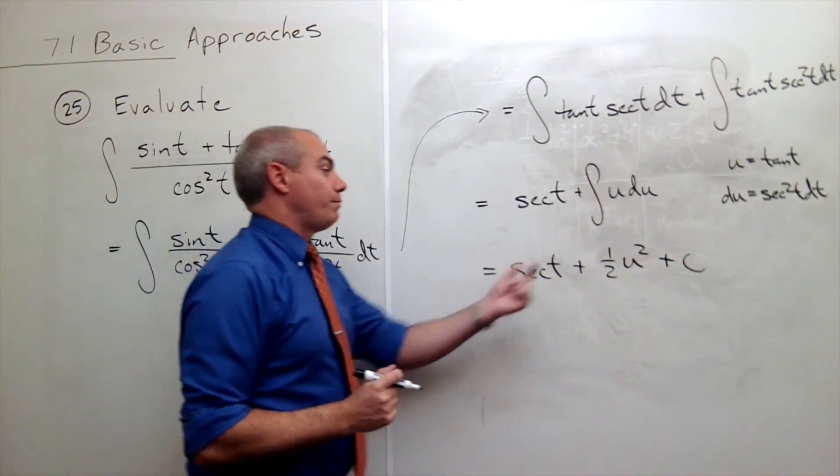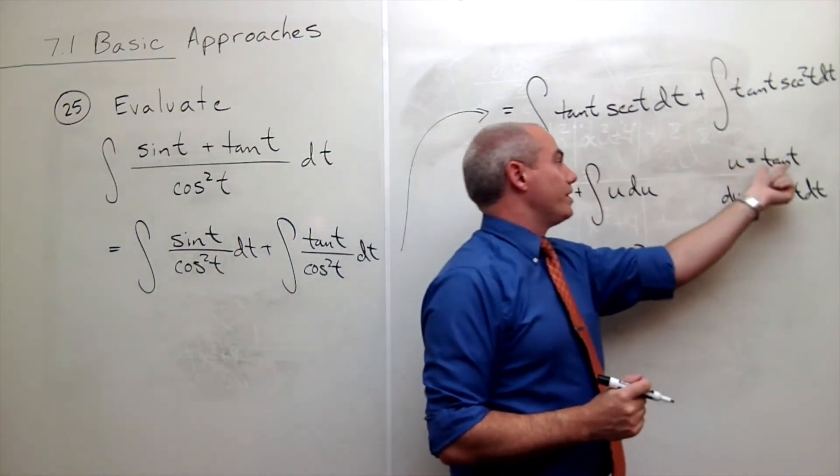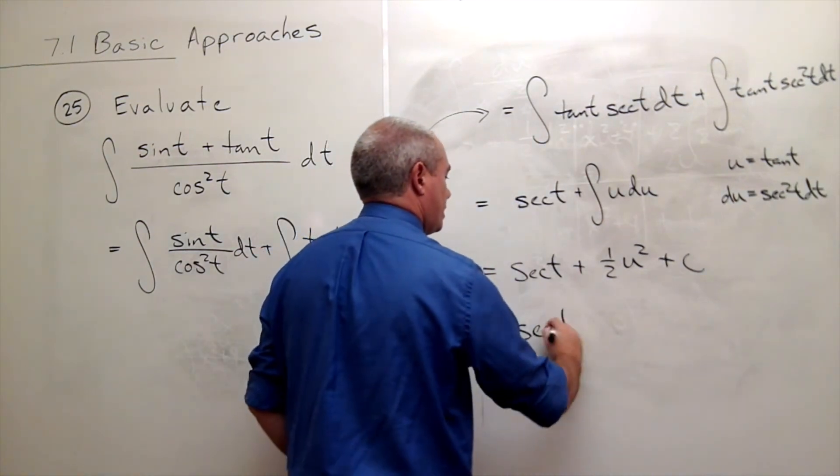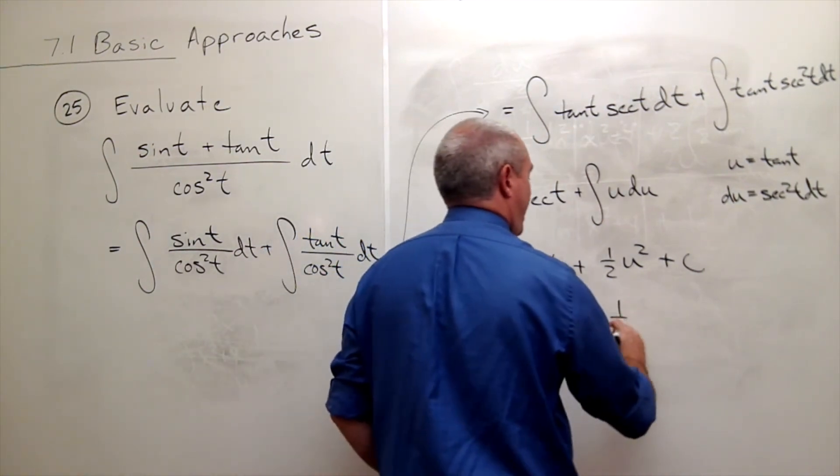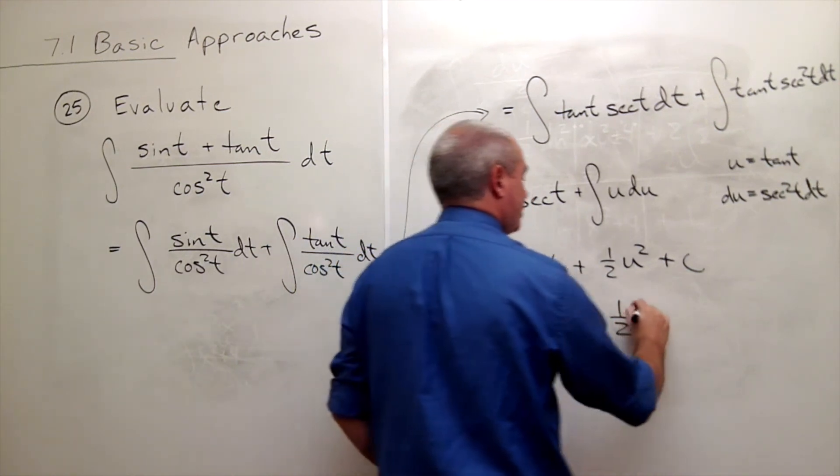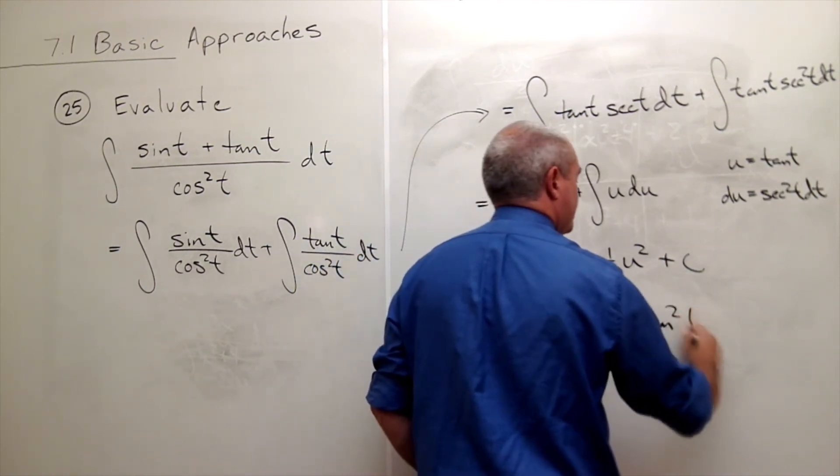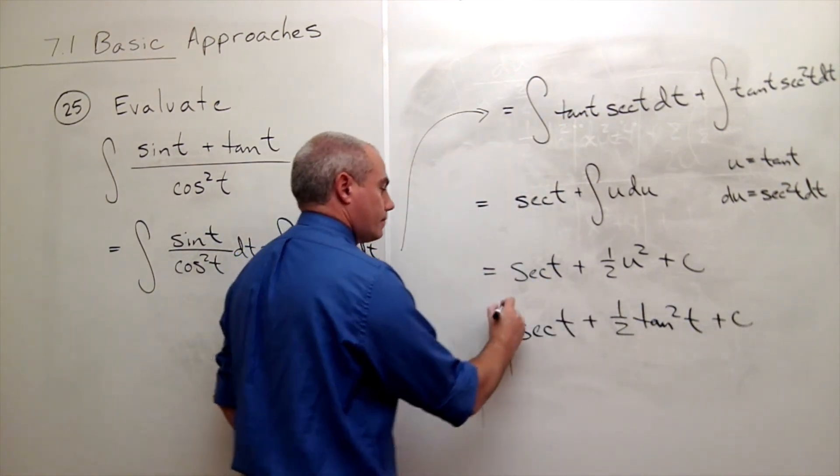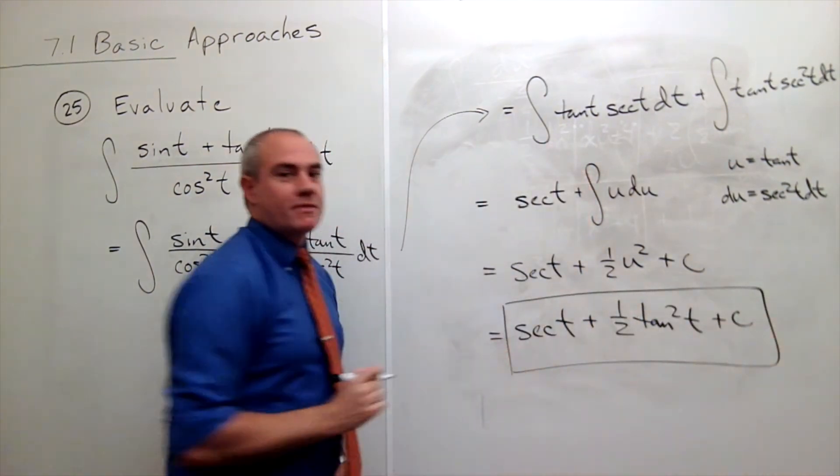Now I have to be careful to put my u back in. U is tangent t, so I can say that this is secant t plus one half tangent squared t plus c. And we are done.